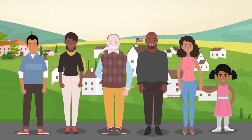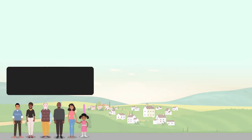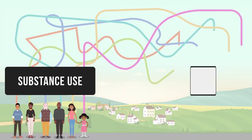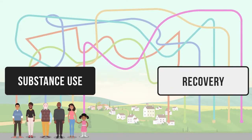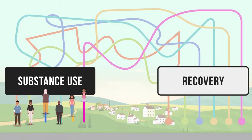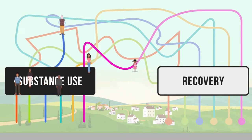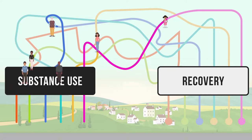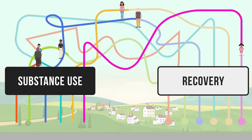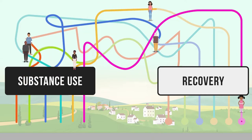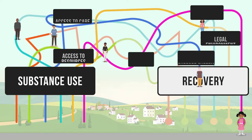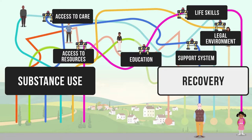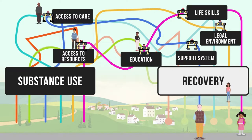In rural communities, the process from active substance use disorders to recovery is an individual and complex journey. It involves huge quantities of life changes that occur at different rates for everyone, and it depends on a variety of factors that are difficult to map and even more difficult to provide, especially in rural areas.